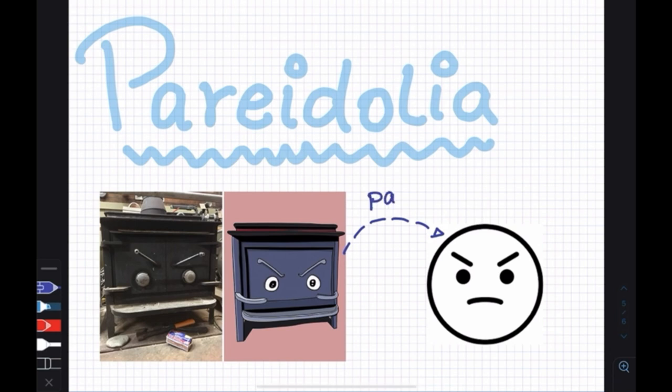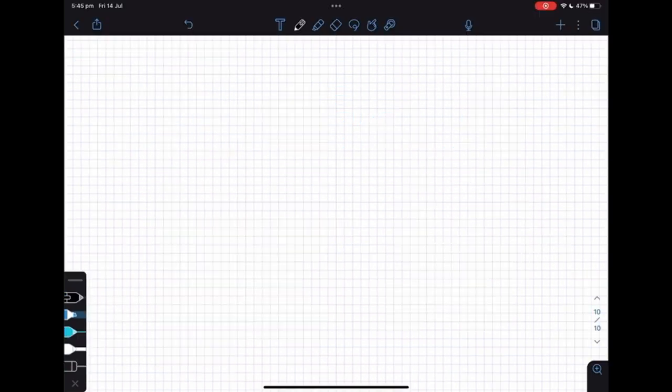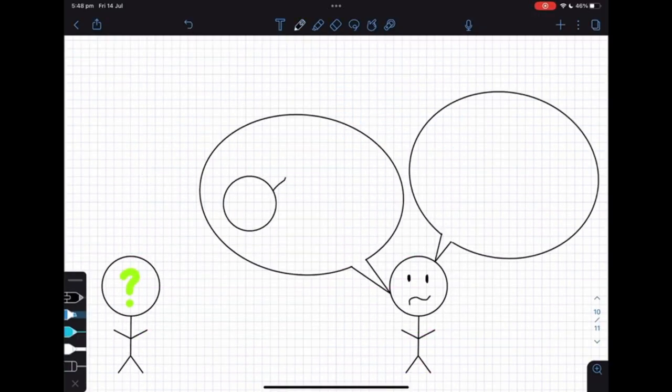Our tendency to spontaneously perceive meaningful patterns, particularly faces, in random stimuli like inanimate objects. Pareidolia arises from the evolutionary benefit of differentiating between friend and foe, in which recognizing a face where there is not one is more advantageous in terms of survival.